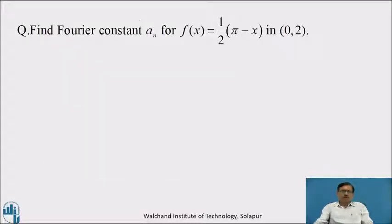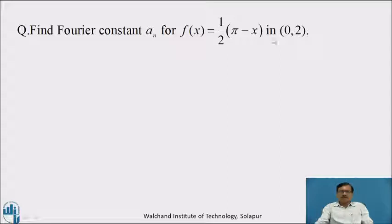Now, pause the video for a while and find the Fourier constant aₙ for f(x) = ½(π − x) in the interval 0 to 2.